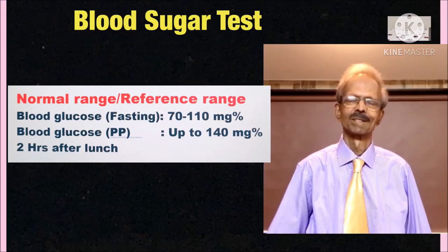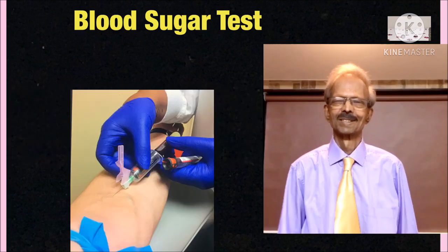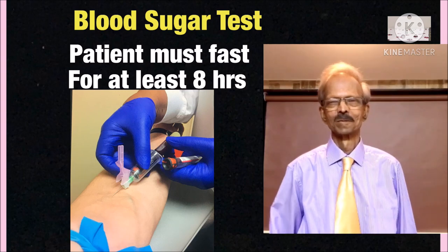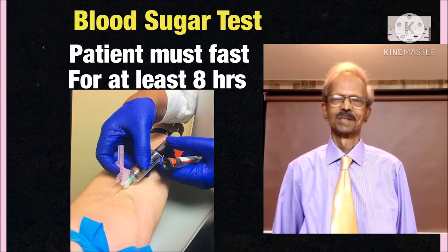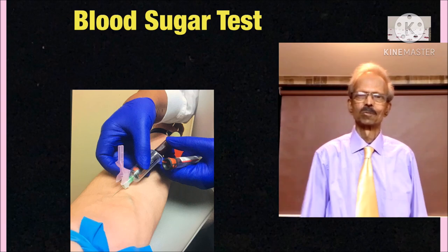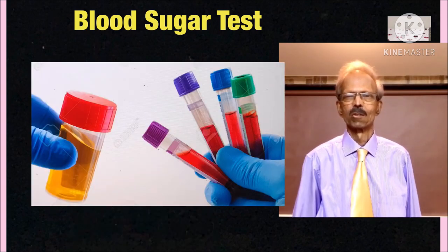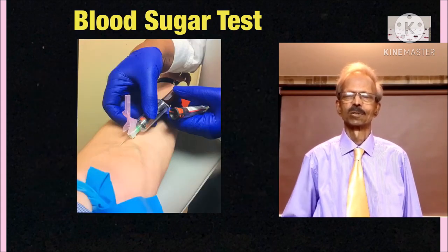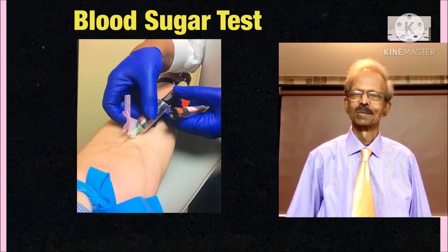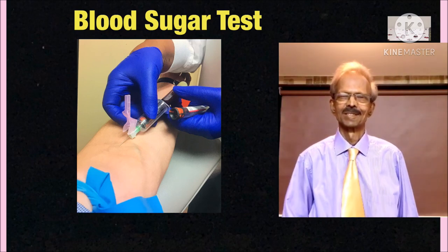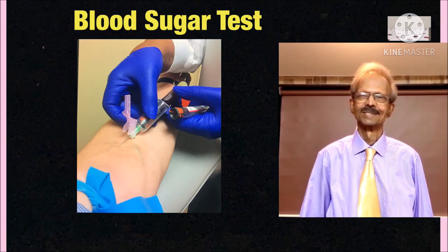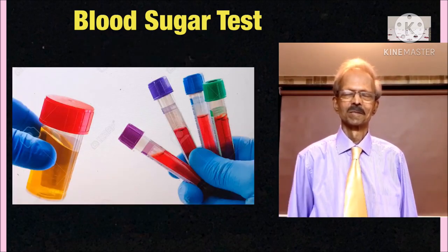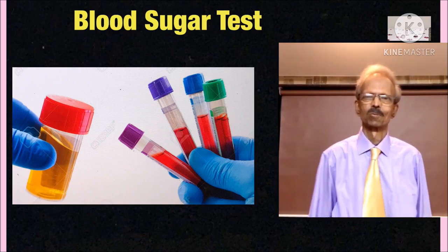Samples for blood glucose test and instructions given to patients: For fasting blood samples, the patient must fast for at least 8 hours and report to the laboratory with a fasting urine sample. For postprandial blood sugar determination, the patient must report to the laboratory 15 minutes early, and a blood sample is collected 2 hours after lunch. The patient should also collect urine samples for the postprandial urine test.